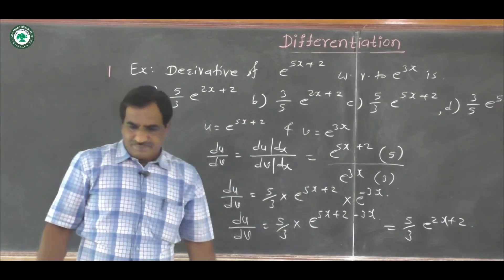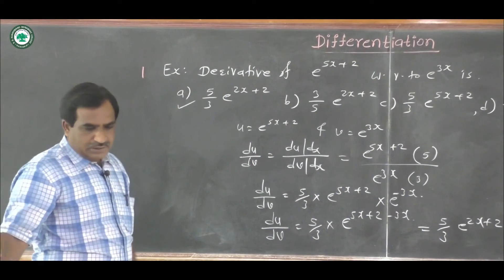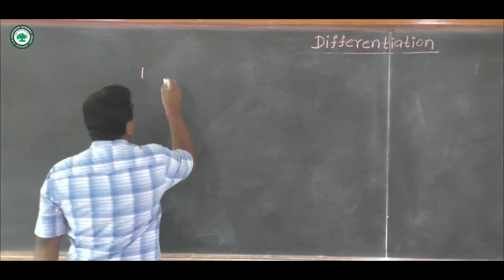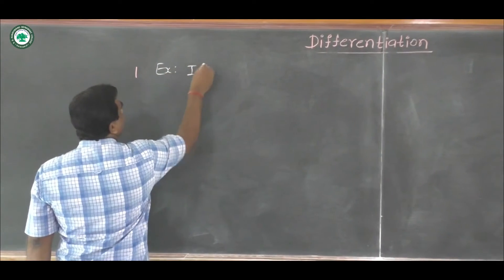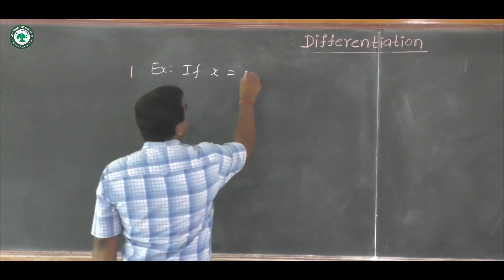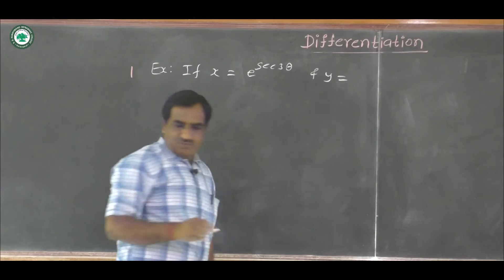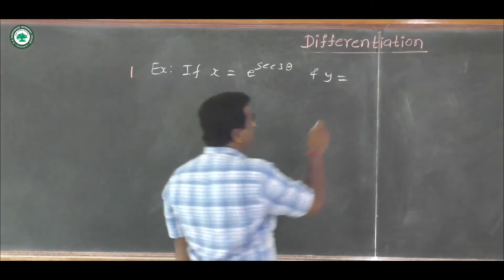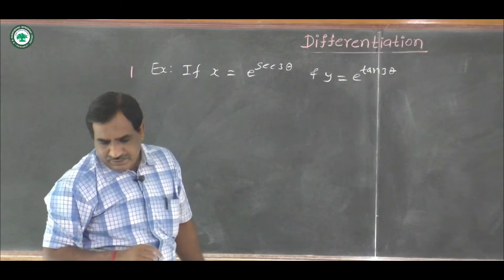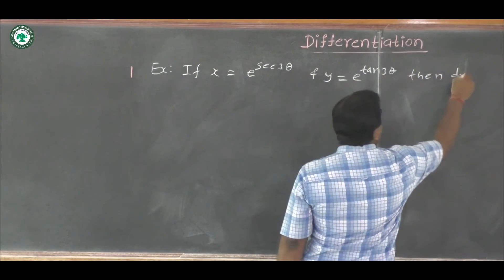Now the next example: if x equals e raised to sec 3 theta and y equals e raised to tan 3 theta, then find dy by dx. Options are given.